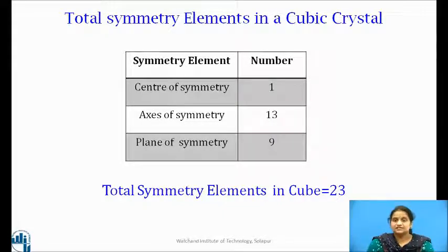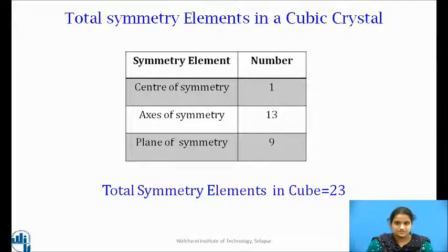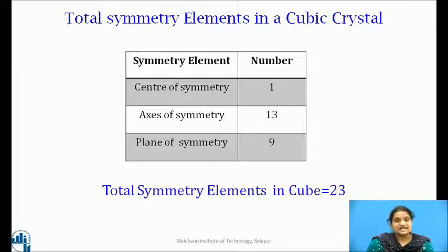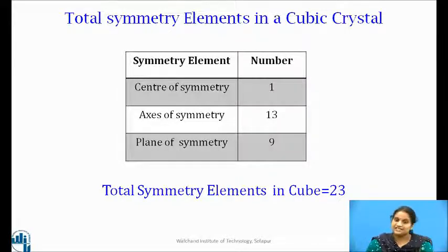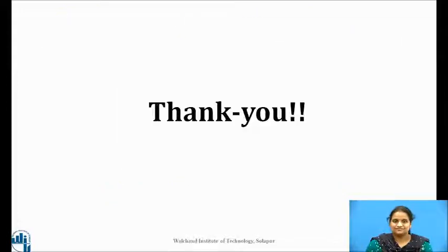The full crystallographic symmetry of a cubic crystal comprises 23 elements of symmetry: 1 center of symmetry, 13 axes of symmetry consisting of 6 diad axes, 4 triad axes, and 3 tetrad axes, and 9 planes of symmetry of which 3 are parallel planes of symmetry and 6 are diagonal planes of symmetry. Thank you.